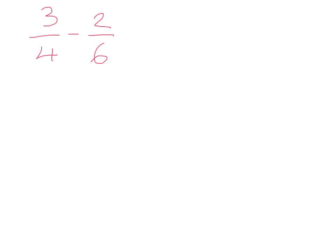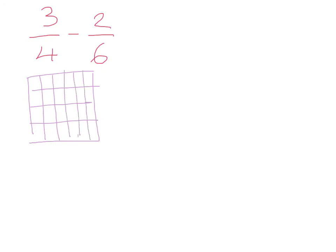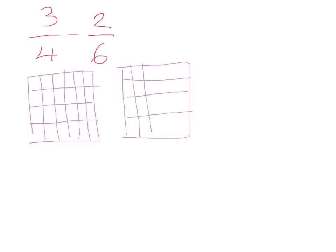Moving on to the last example before I get you to try one on your own: 3 over 4 minus 2 over 6. From drawing my buildings, my building is going to have 4 floors and each floor is going to have 6 rooms. Again, two identical buildings — 4 floors and 6 rooms. My first building has 3 fourths occupied, so that's 1 fourth, 2 fourths, and 3 fourths of this building occupied.